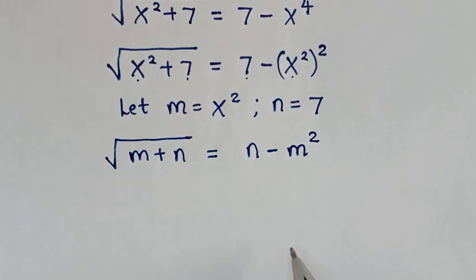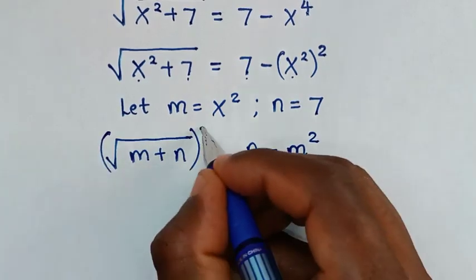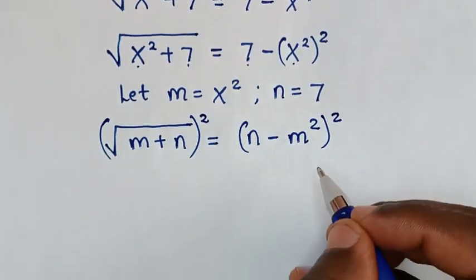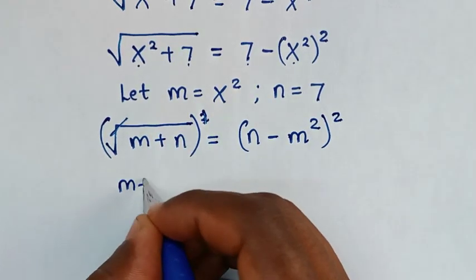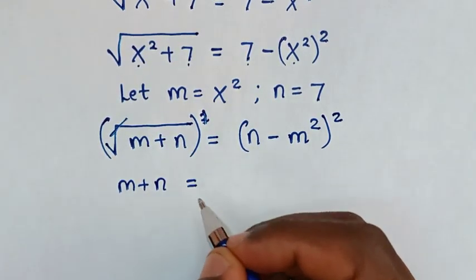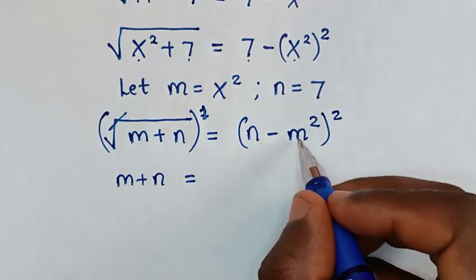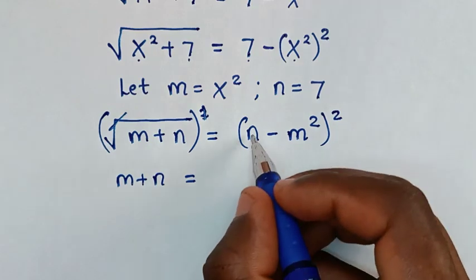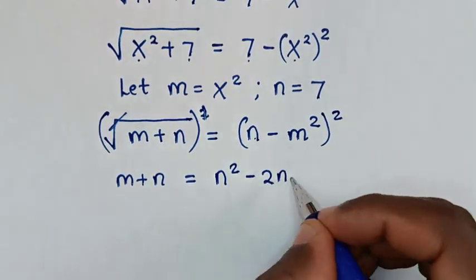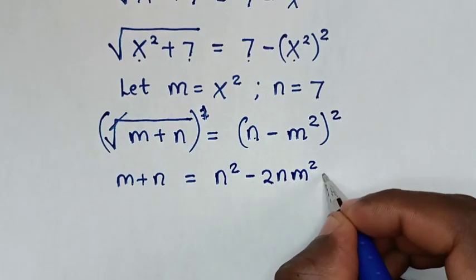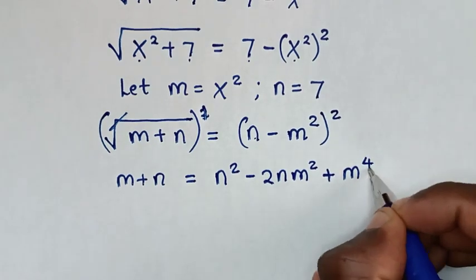In the next step, to remove this square root we square both sides. The square root cancels the square, so it becomes m plus n equals (n minus m squared) squared, which expands to n squared minus 2nm squared plus m to the power of 4.